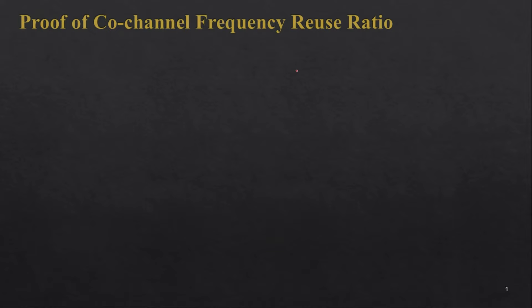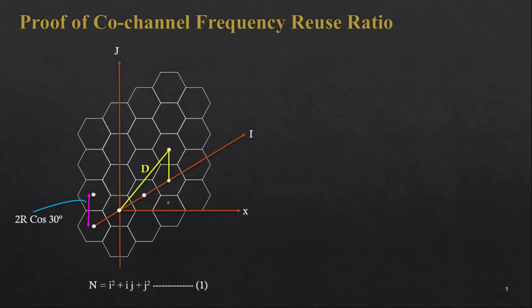To prove this, first we have to consider the hexagonal geometry. Here you can see that we have a random number of hexagonal cells. Let's say we want to find out the co-cell of this particular cell. In order to do that, first we have to move on the i-axis, where with respect to this axis, this angle will be 30 degrees.